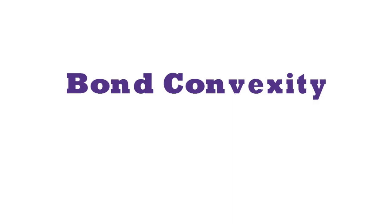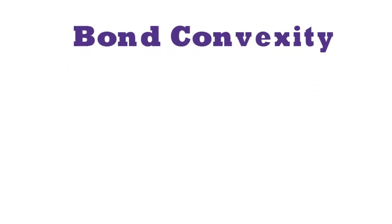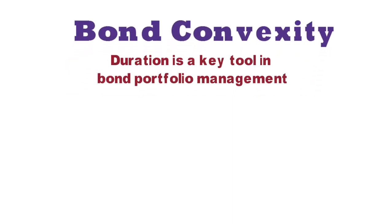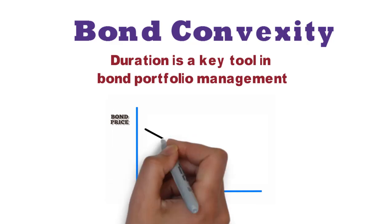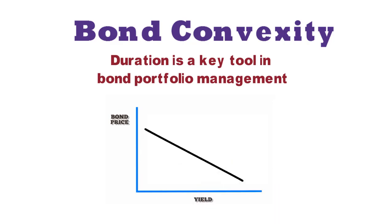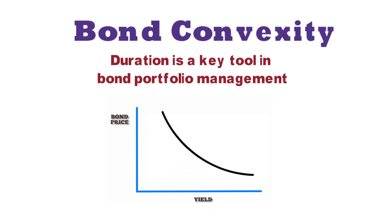We know that duration is a key tool in bond portfolio management. Yet the duration rule for the impact of interest rate on bond prices is only an approximation. One reason is that duration assumes the percentage price change is directly proportional to the change in the bond's yield. In reality, the price-yield line is not straight but convex.